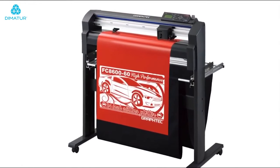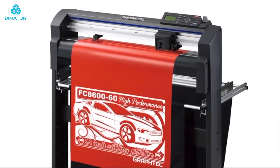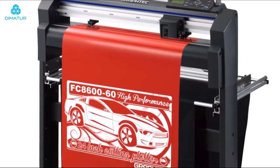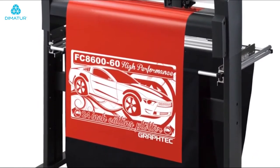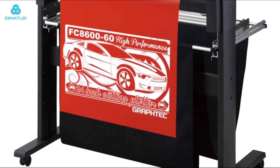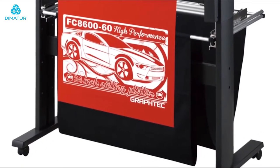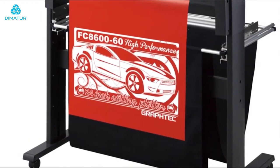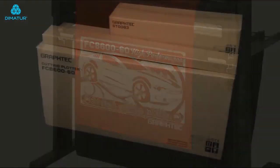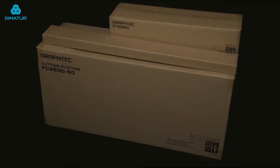All FC8600 models have a similar process to building the stand, so we will cover building the FC8600-60. To build the stand, first unbox all the parts and pieces to the stand. Keep in mind that some of the stand parts, such as the screws, are located in the main cutter box.